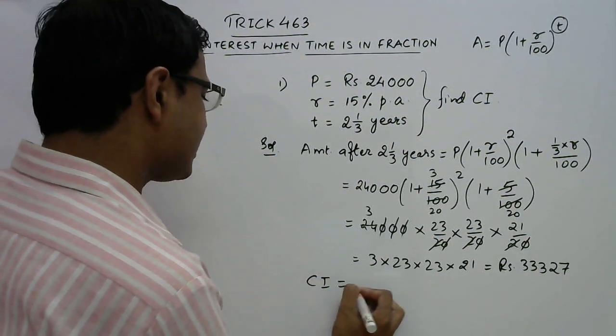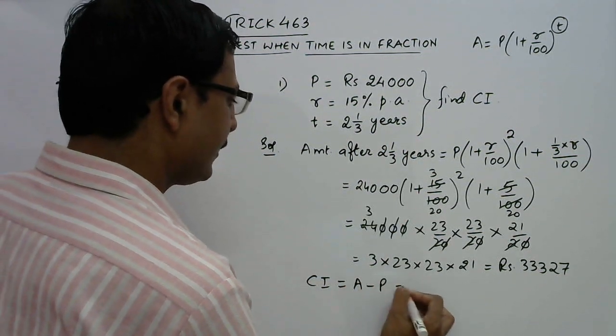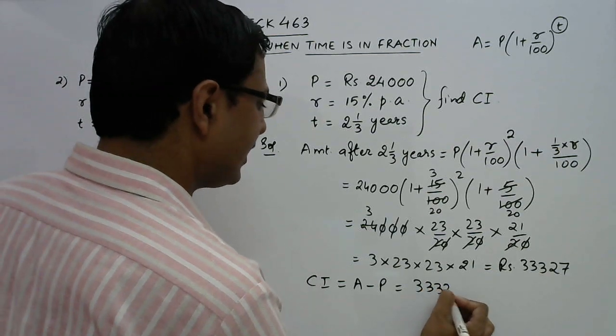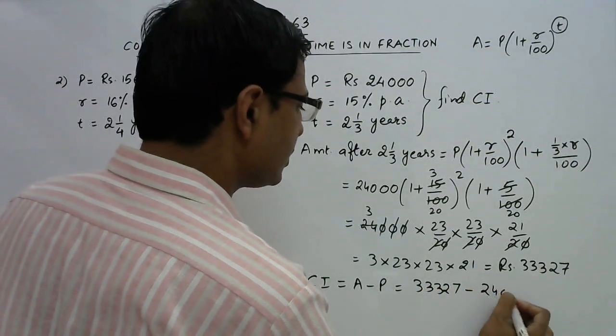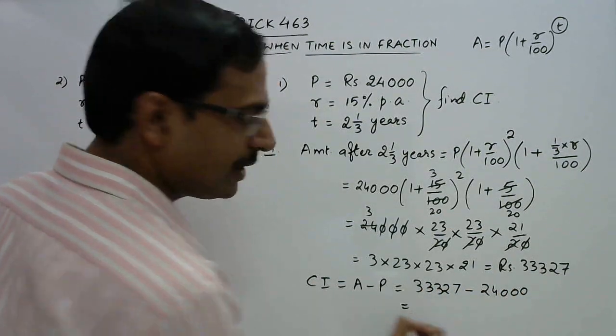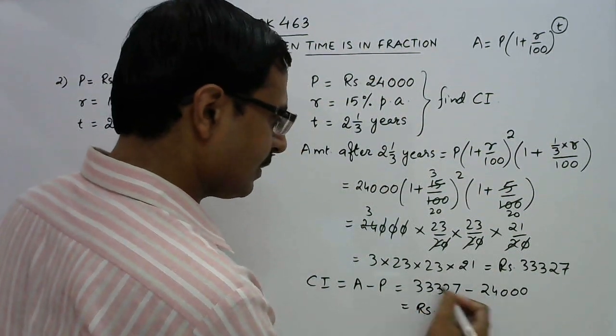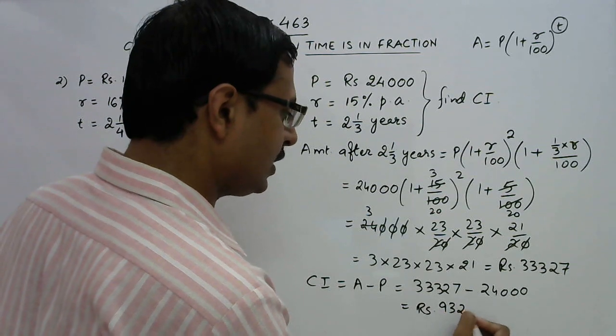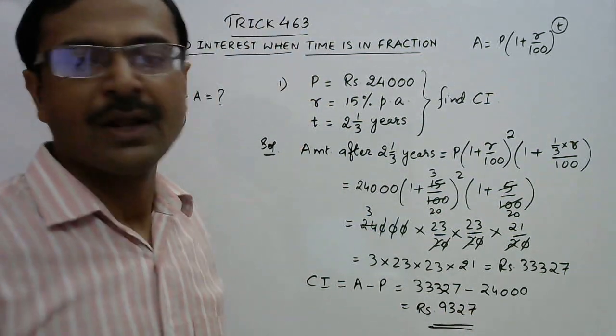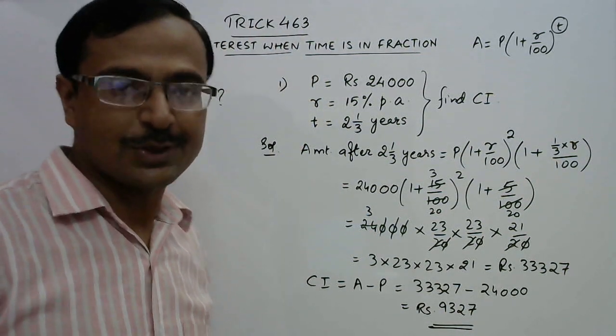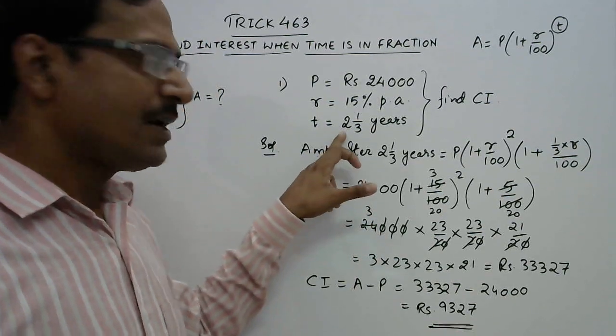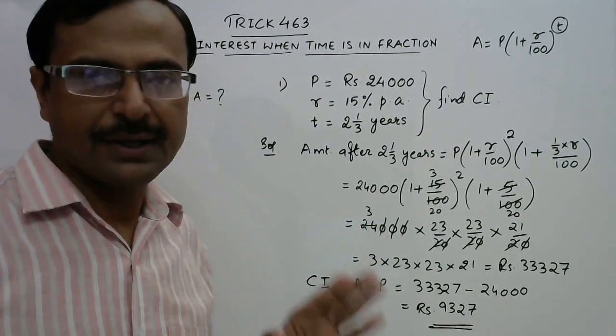Now we need to calculate the compound interest, which is amount minus principal. Amount is 33327 and the principal was 24000. So this will be rupees 9327 which is the final answer for this question. This is how we tackle this problem of fractional years.